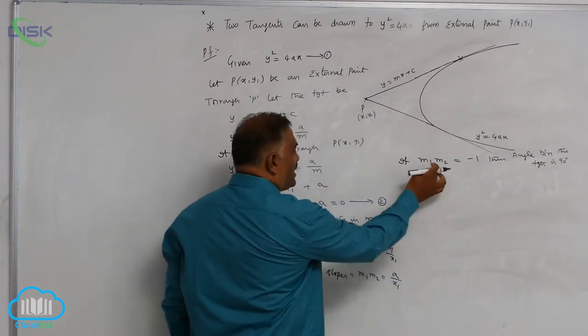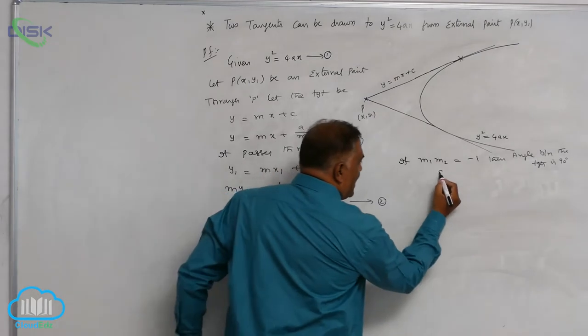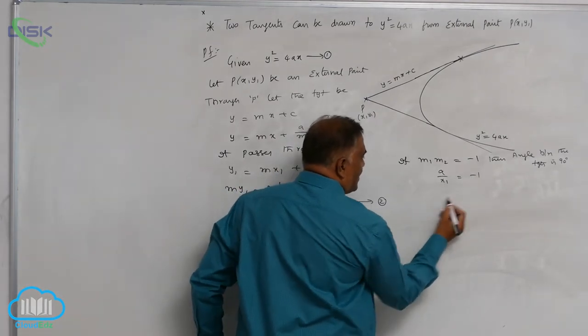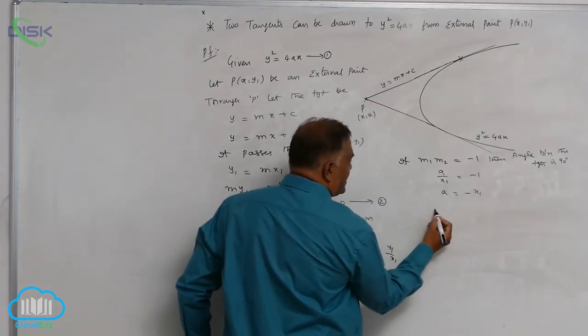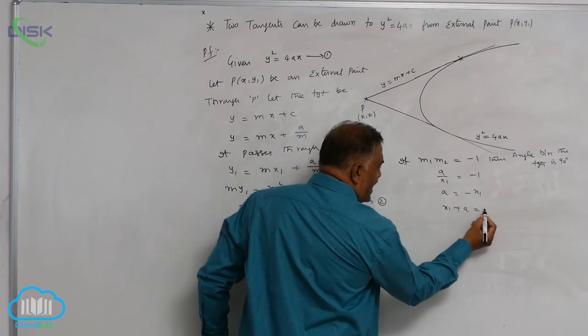What is m1 m2 value? a by x1. So a by x1 is equal to minus 1, which gives a is equal to minus x1, or x1 plus a is equal to 0.